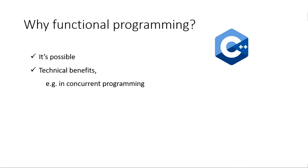Then there are benefits which I would call technical benefits. For example, in concurrent programming, it turns out that objects are not always the best choice because they have state and they might hide important things that can lead to data races. But what I want to focus on in this talk mainly is that functional programming allows us to write very expressive code.